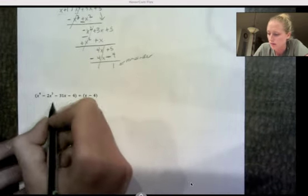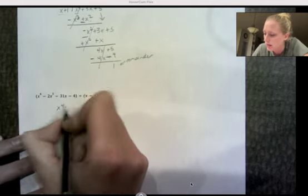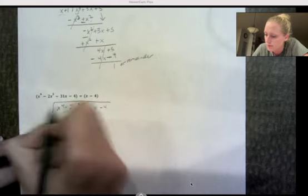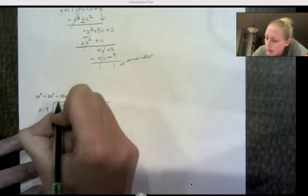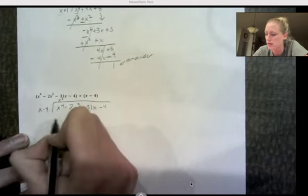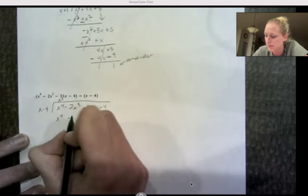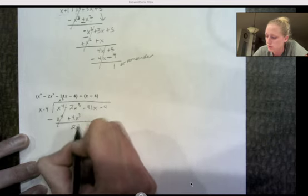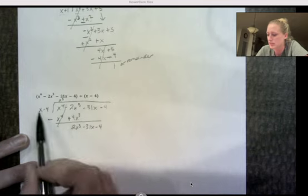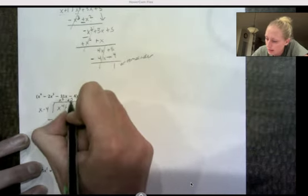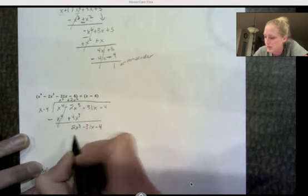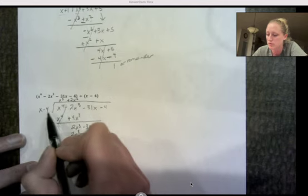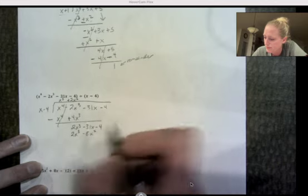Let's try another one: x⁴ + 2x³ + 31x − 4 divided by x − 4. x times what equals x⁴? x³. Multiply: x³ times x is x⁴, x³ times negative 4 is negative 4x³. Draw the line, change the signs. Negative 2x³ plus 4x³ is positive 2x³. Repeat: x times what gives 2x³? 2x². 2x² times x gives 2x³. Note: leading terms always cancel — that's how you know you're doing it right. 2x² times negative 4 is negative 8x².